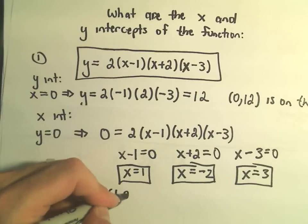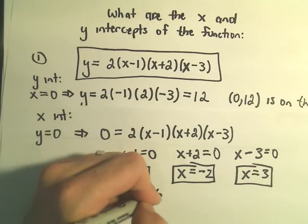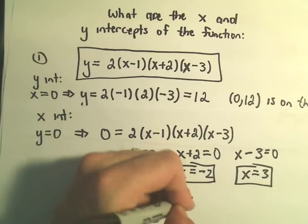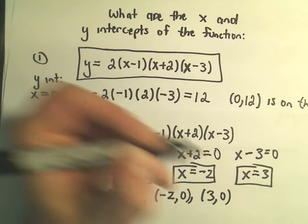Or we could write them as points: (1, 0), (-2, 0), and (3, 0).